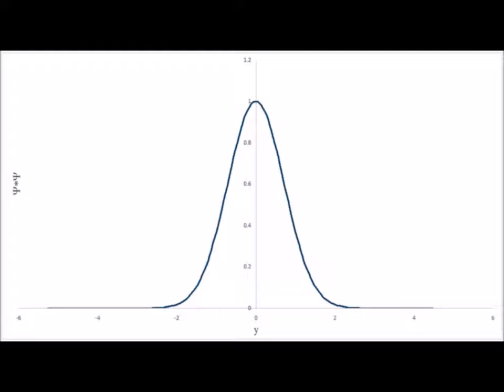Here is the probability density, psi-star psi, for the n equals zero ground state of the quantum harmonic oscillator. We note that the particle overwhelmingly spends its time right around x equals zero, which is the equilibrium bond distance.